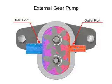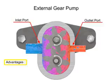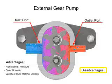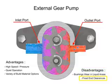The advantages of external gear pumps are their high speed and pressure, relatively quiet operation, and that their design accommodates a wide variety of materials. Disadvantages include bushings in the liquid area that can become worn, and that they have fixed end clearances.